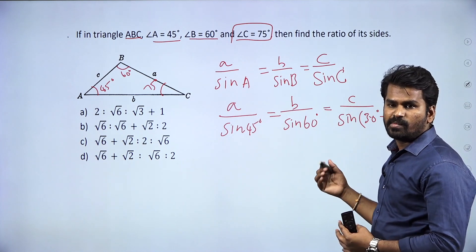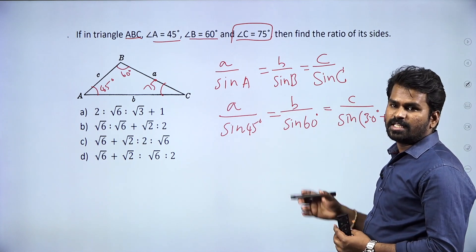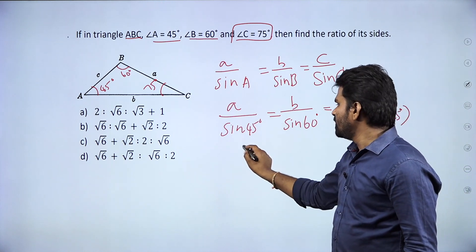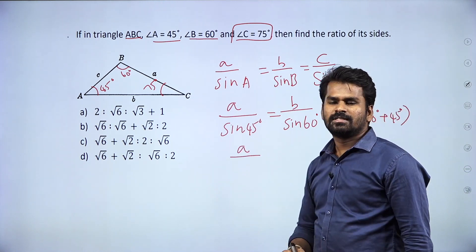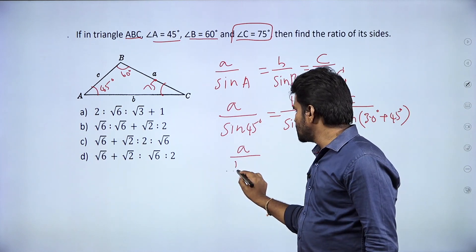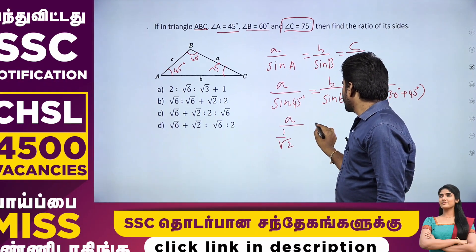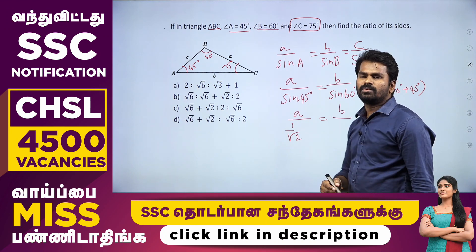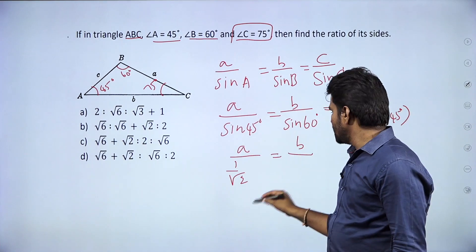Using this formula, we split sin 75. Now sin 45 degree is 1 by root 2. And sin 60 degree — what is it? — root 3 by 2.